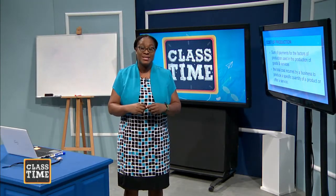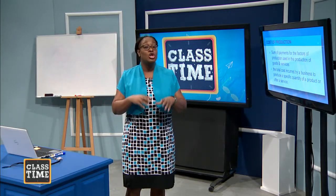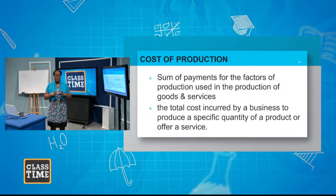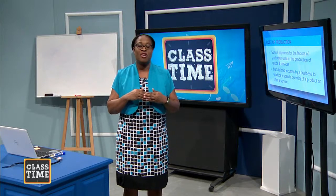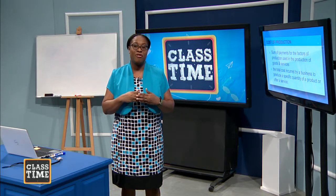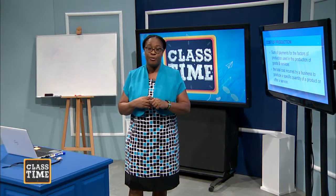So once again, by definition, the cost of production is the total costs incurred by a business to produce a specific quantity of a product or service. They have to pay for land, capital, labor, and all other miscellaneous services — all of that is incorporated in the cost of production.